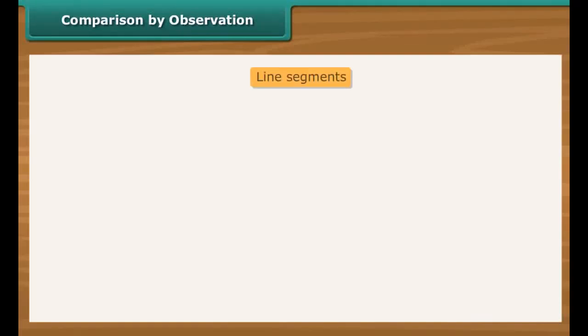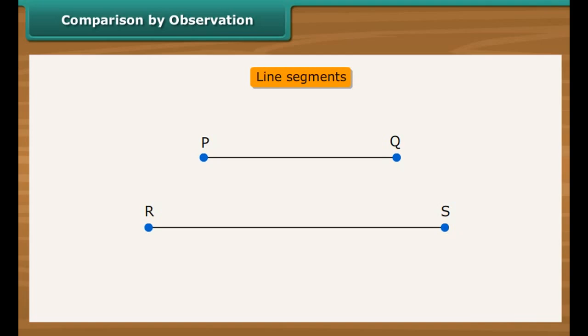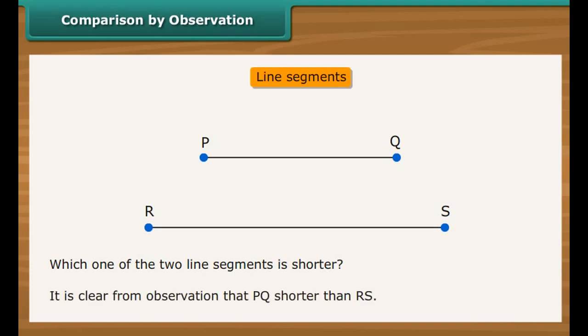Comparison by observation: Look at the two line segments PQ and RS. Which one of the two line segments is shorter? Observe the two line segments — it is clear that PQ is shorter than RS.